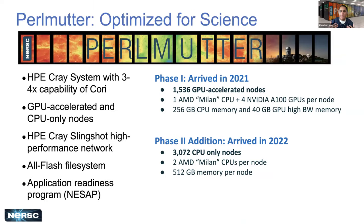About our system Perlmutter: it is our large-scale HPE Cray system, and it replaced our old system Cori, which was a highly CPU-focused system. With Perlmutter, science has transitioned more towards using GPU-accelerated nodes. I'm sure everyone has heard about that in the generative AI trends that have made use of GPUs for accelerating science.